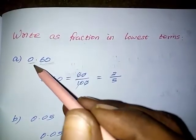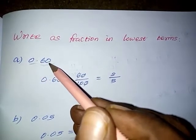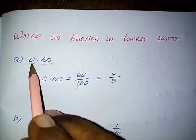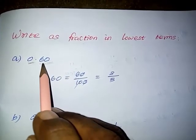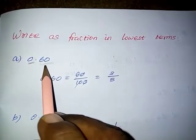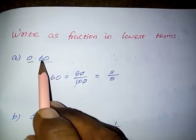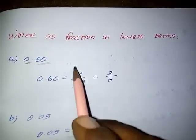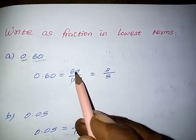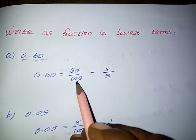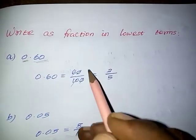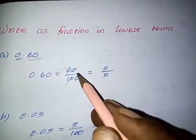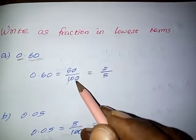Question number 1: 0.60. The given decimal integral part is 0 and decimal part according to place value — 10th and 100th. So, the fraction of the decimal part is 60 by 100, because the given decimal ends with the 100th place. So we have to write 60 by 100.